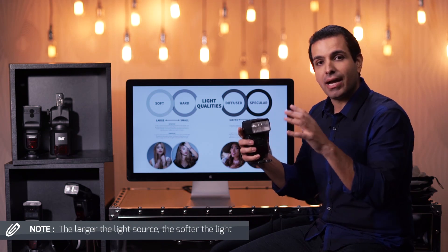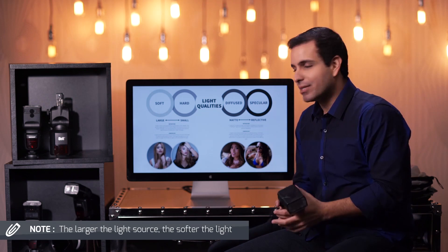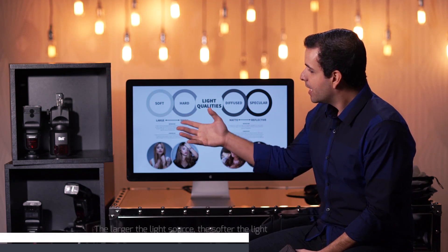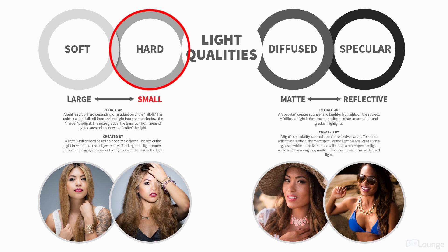It's always in relation to the subject. The larger the modifier we use, the softer that transition from shadow to highlight is going to be. The smaller the modifier, the harder that edge is going to be.